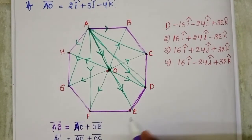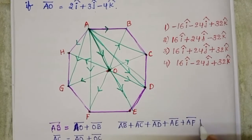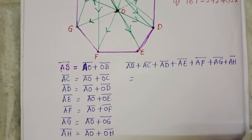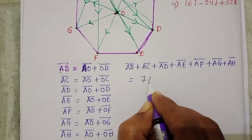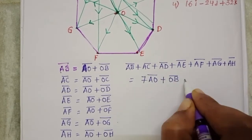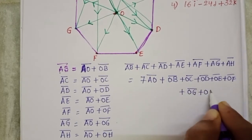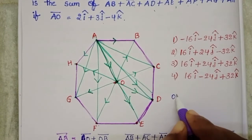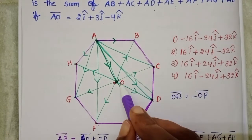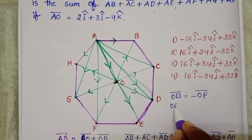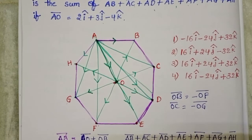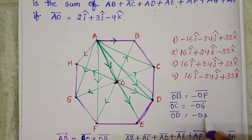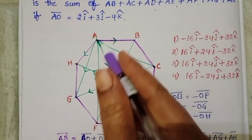Now the sum of all these vectors — in all these vectors, AO bar is common, so we get 7 AO bar plus the remaining terms. Here OB bar and OF bar act in opposite directions, so OB bar equals minus OF bar. OC bar equals minus OG bar. OD bar equals minus OH bar. OE bar equals minus OA bar.